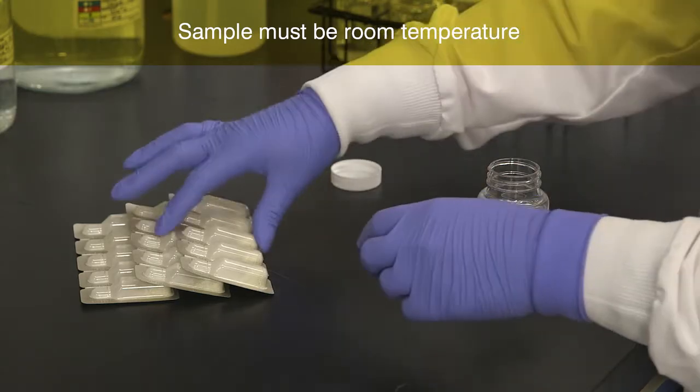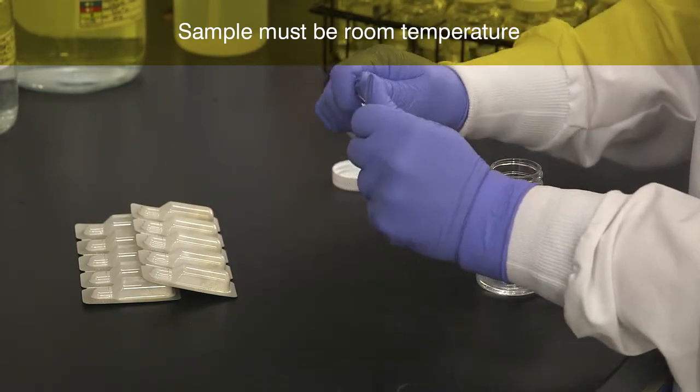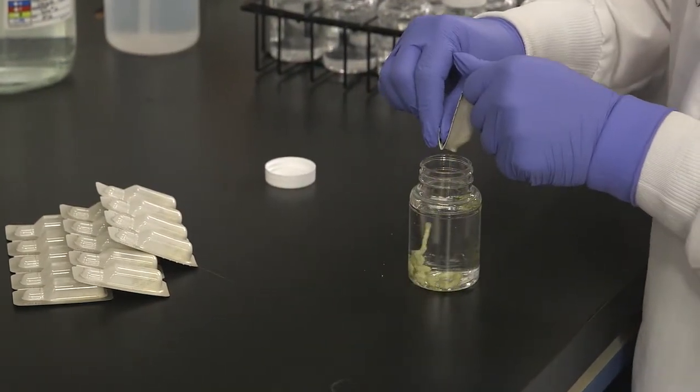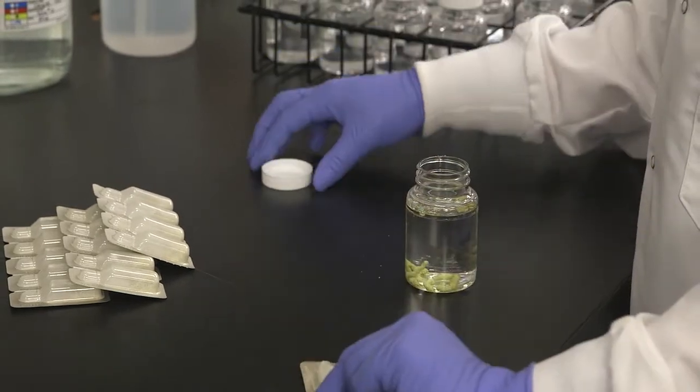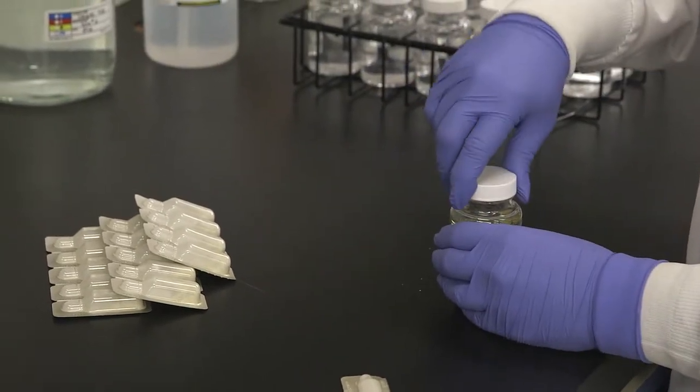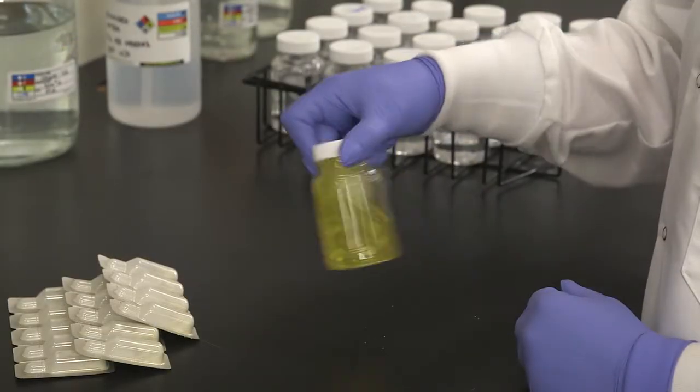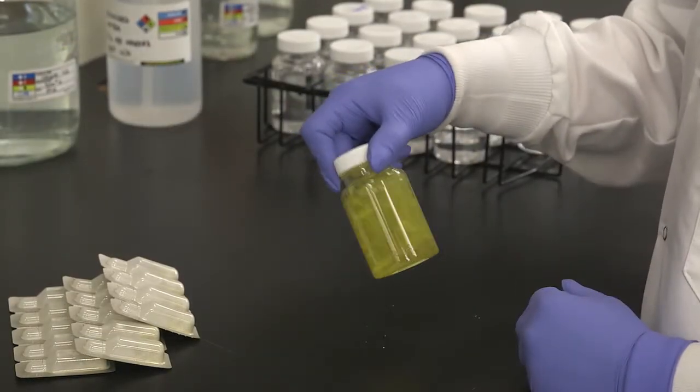Allow the sample to come to room temperature. Separate one ColiShore pack from its strip, taking care not to accidentally open the other packs. Snap open the reagent pack and pour the powder into a 100ml water sample. Cap the vessel and shake to dissolve the ColiShore powder. The sample will turn yellow as the reagent dissolves.